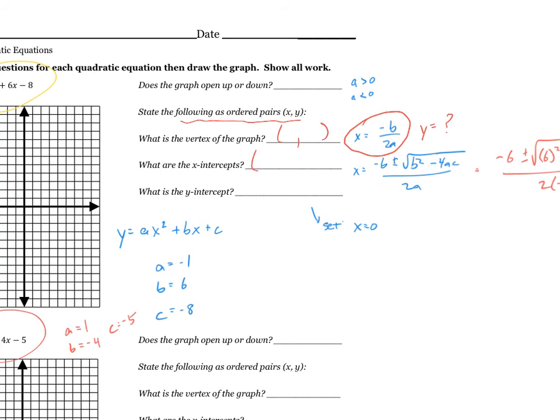When you find your x-intercepts, for both of them, the y-coordinate is going to be 0. And when you find your y-intercept, the x-coordinate is going to be 0. So there's just a little bit of help with what the answer should look like.